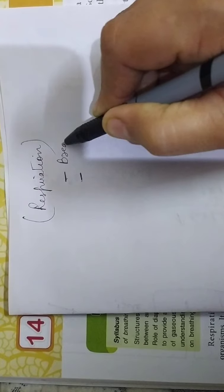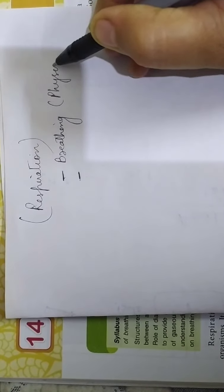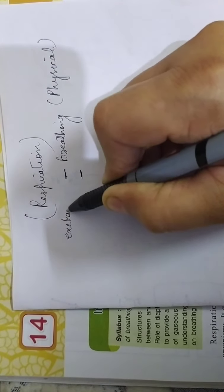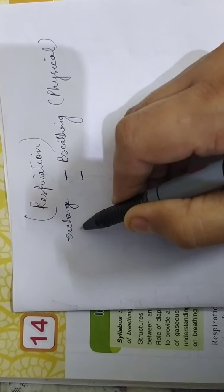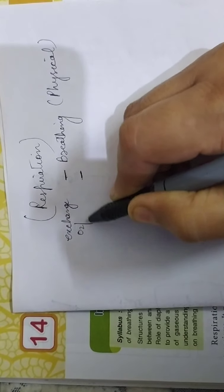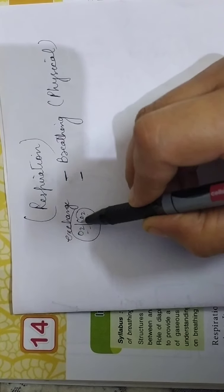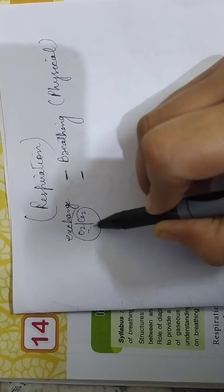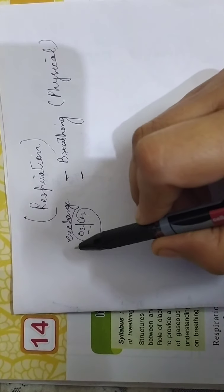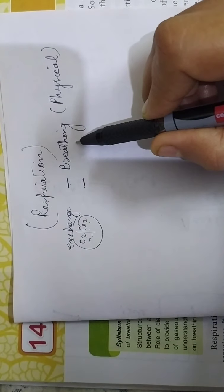The first phase is known as breathing. This breathing is a physical process and it involves the exchange of gases. This exchange of gases occurs through various means, taking in air rich in oxygen and giving out carbon dioxide rich air.